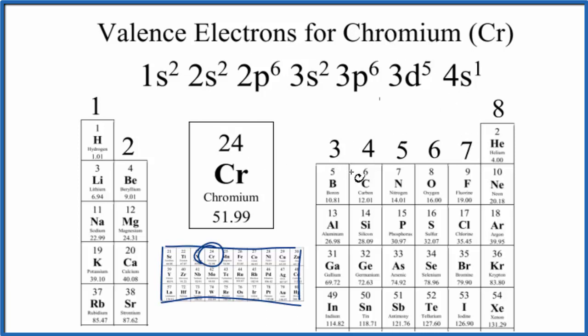So we could look at the noble gas before chromium. Chromium is 24, so we'd look for right here, argon, 18. So we could put brackets around those 18 electrons, and that would be the core notation for argon. Then we could write a condensed notation, and that would look like this.